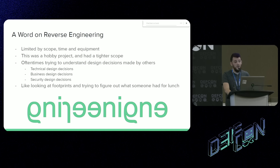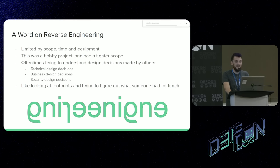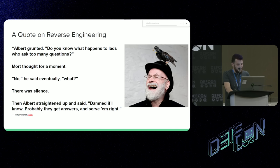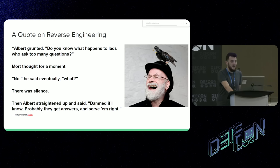Now it's time to get into reverse engineering, and this is where the concept of scope comes in. This is a hobby project. Whenever you're reverse engineering something, there's near infinite scope available. You can go as deep as you want and as deep as you have time for. There were some things that were a dead end and I left them. There are a couple mystery chips where I was like, that's probably what this is, and I could have fully traced out the PCB and made more educated guesses — but I didn't, because that wasn't in the scope I set for this project. Reverse engineering can sometimes be like looking at footprints and trying to figure out what the person had for lunch. And it wouldn't be a presentation I'd give if I didn't sneak in a Terry Pratchett quote: 'What happens to people who ask too many questions? They get answers, and it serves them right.' And we got some answers.